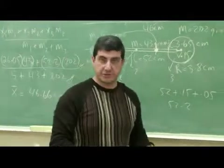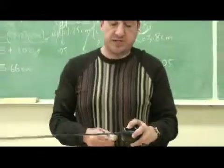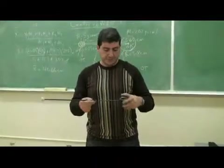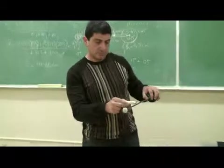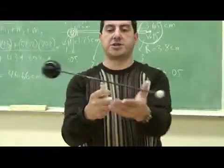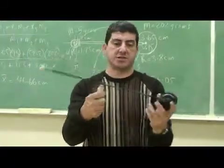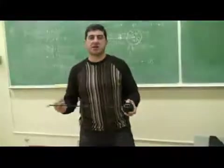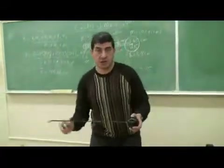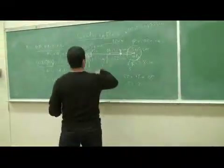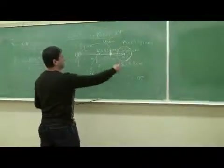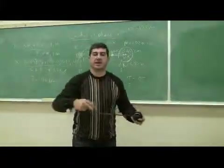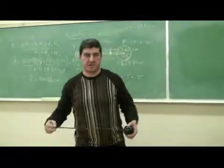Our calculated answer is 46.66 centimeters and the measured value is about 47.25, so we're about 0.6 centimeters off. The reason for that is some irregularities in the object — there's another hole drilled at the actual geometric center to show that is not the center of mass. Also, the threaded portion of the rod weighs less because some metal is removed. These irregularities throw the calculation off slightly, but this illustrates the concept of how you find the center of mass of a composite object.